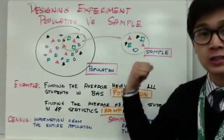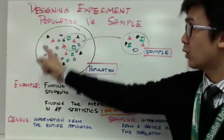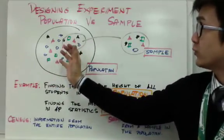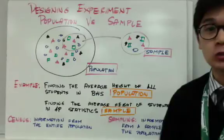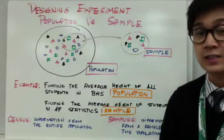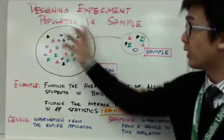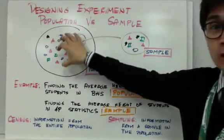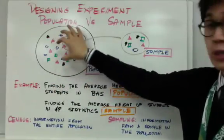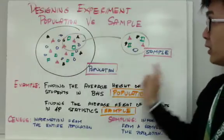In the illustration that I have on the board, you'll see my population here, which is a group of individuals, and you're trying to create an experiment by collecting data from your population. And when you collect a certain number of individuals from the population, this will be your sample.